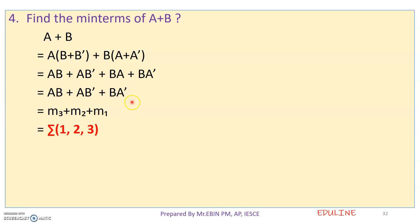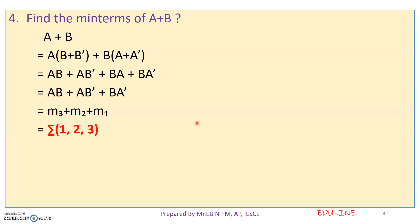We have a canonical form. This is SOP form; we have minterms. The minterms are directly M3, M2, M1. M3 is 1,1 which is 3; 1,0 is 2; this is M1. So we have minterms and maxterms. If we have minterms we have the canonical SOP formula; for maxterms we have the canonical POS formula.